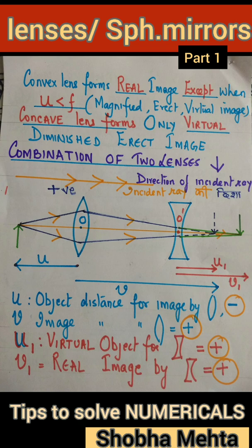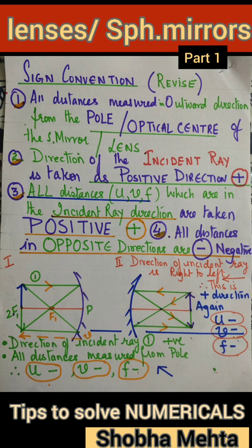It is extremely important to understand the image formation and the sign convention to be adopted in these questions. Remember, convex lens and concave mirror form real images when object distance is greater than the focal length, and virtual diminished images when U is less than F. Also, concave lens and convex mirror only form virtual diminished erect images.